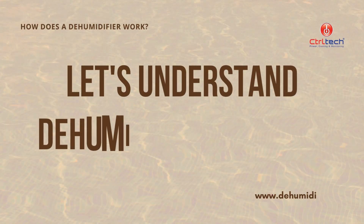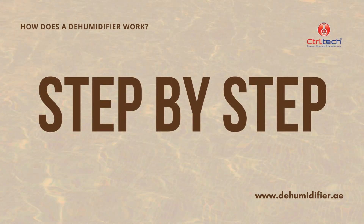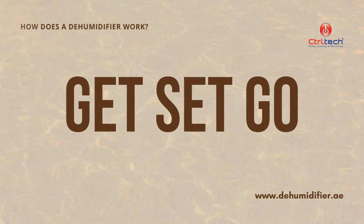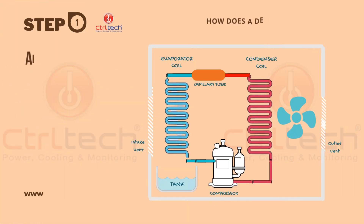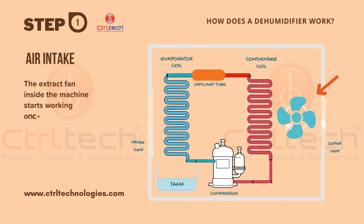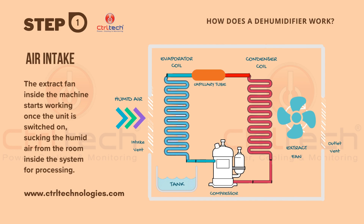After gathering all this basic information, we are now ready to understand how the dehumidifier actually works. We will understand it step by step. In step one, when the user starts the dehumidifier, the extract fan starts working. It pulls the humid air from the room into the dehumidifier, where this humid air is subjected to the process of removing humidity from it.